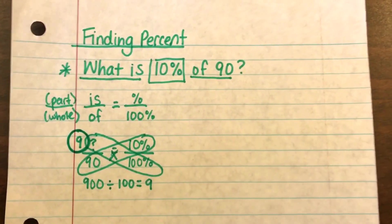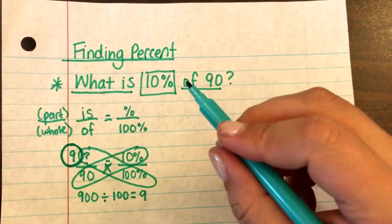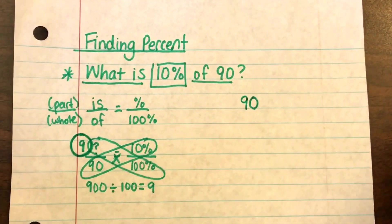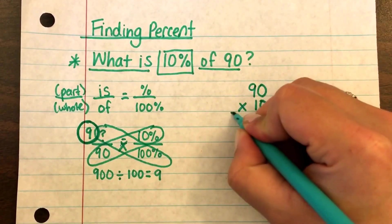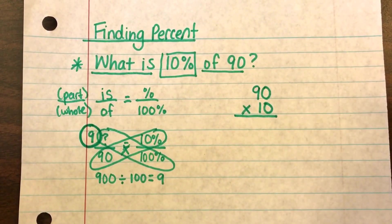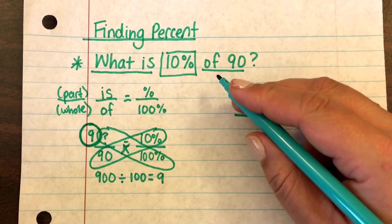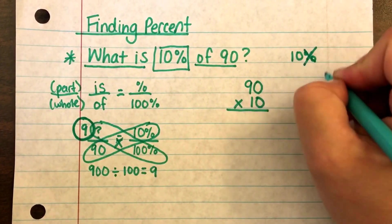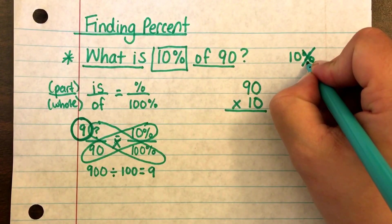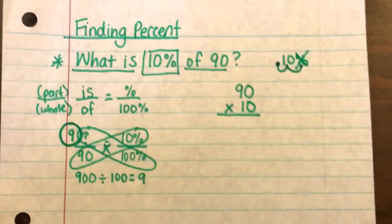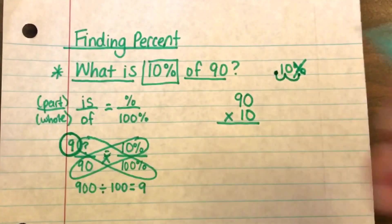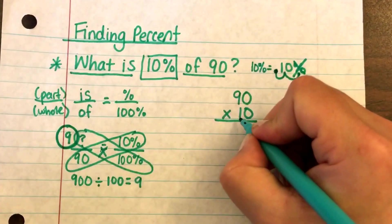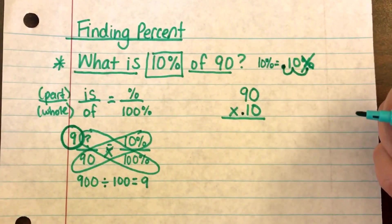You could also do it by multiplying decimals. You cannot just use 10 — that's where a lot of kids get confused. They automatically think they can take 90 and multiply it by 10, but that is not the number you should use for percentage when multiplying. Instead, take your 10% and change it to a decimal: drop the percent sign, move the decimal point two places to the left. So 10% is the same as 0.10.